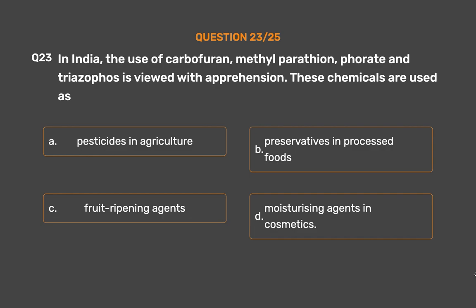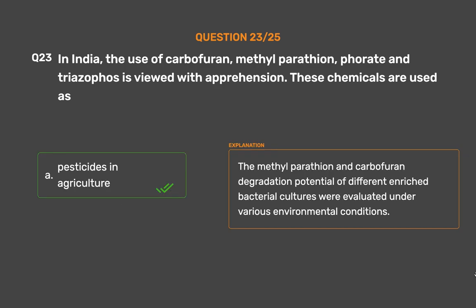The correct answer is Option A: Pesticides in agriculture. The methylparathion and carbofuran degradation potential of different enriched bacterial cultures were evaluated under various environmental conditions.